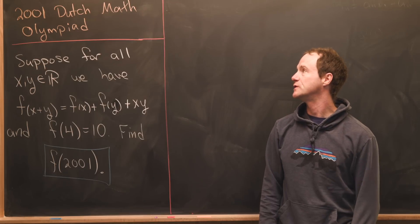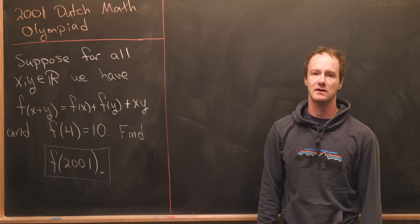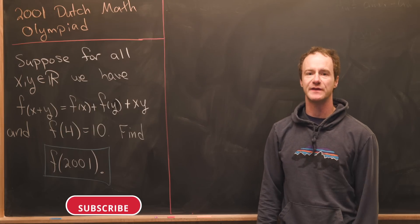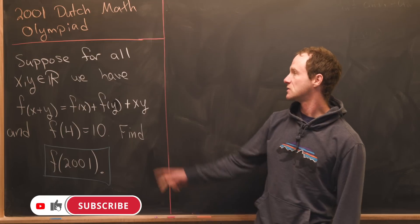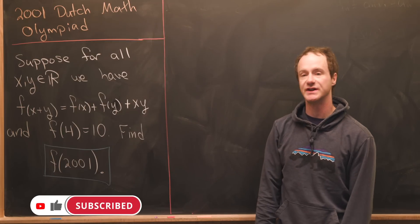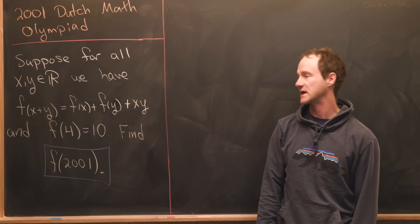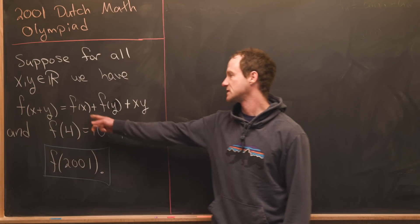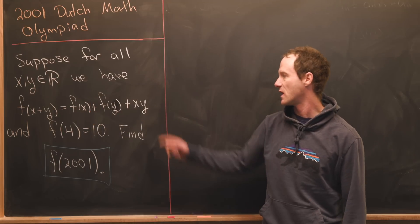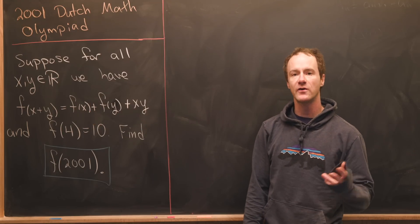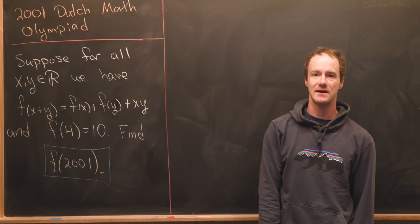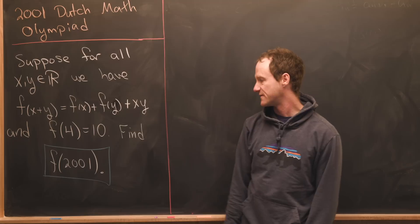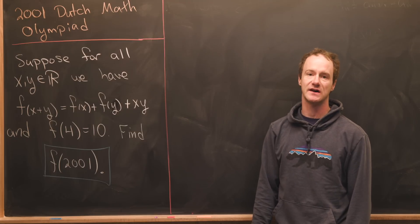Here I've got a nice problem for you from the 2001 Dutch Mathematical Olympiad. So it has to do with a functional equation. Let's suppose we've got a function so that for all real numbers x and y, we see that f of x plus y equals f of x plus f of y plus xy. Furthermore we know that f of 4 is equal to 10, and then our goal is to find f evaluated at 2001.